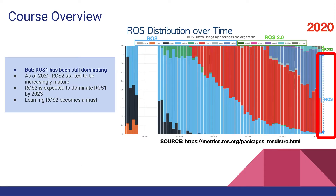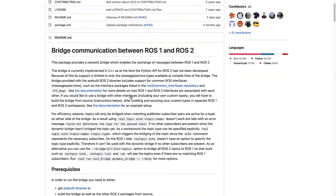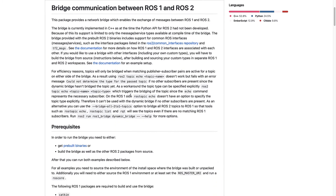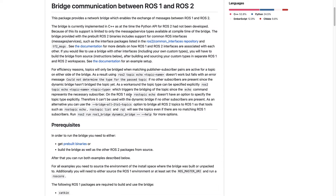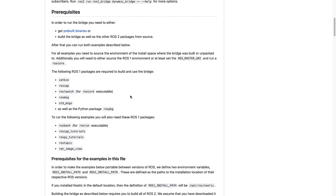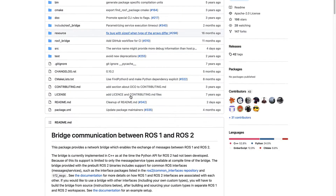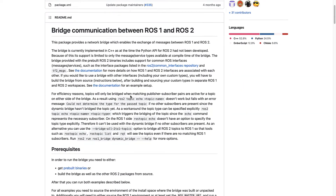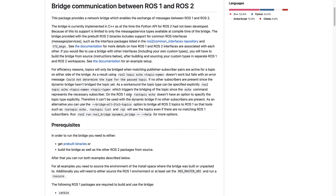Despite the release of ROS2, ROS1 was still being used more actively than ROS2 until 2022. The main reason is that ROS2 had been under continuous development and did not reach the same level of maturity as ROS1. In fact, the ROS2 developers created the ROS1 bridge package to be able to communicate between ROS1 and ROS2 when ROS2 had missing functionalities that could only be found in ROS1.